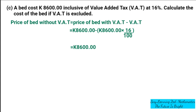I'm going to cancel out the zeros. Be careful not to cancel the zeros for the number itself — make sure you cancel the kwacha zeros carefully. Dividing 8,600 by 100 gives 86, so I'm left with minus 86 kwacha multiplied by 16, and 1 into 16 is 16. So: 8,600 kwacha minus 86 kwacha multiplied by 16 gives us 1,376 kwacha. That is the value of VAT.